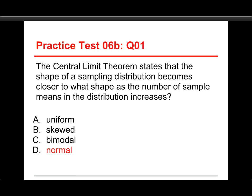The answer on this one is normal. Uniform means totally flat, and that doesn't happen with the central limit theorem. Skewed — no, because it goes to normal, it's symmetrical. And bimodal — not at all. It becomes a unimodal symmetrical bell curve.